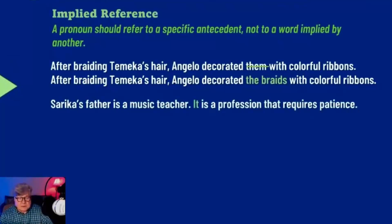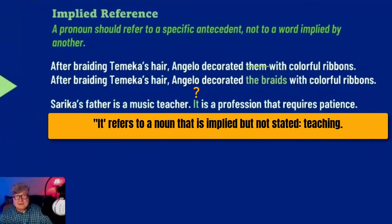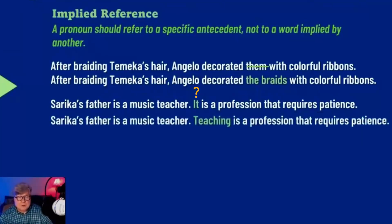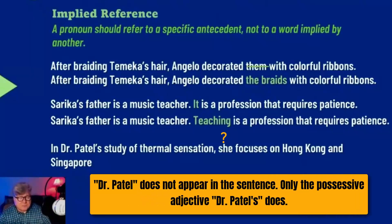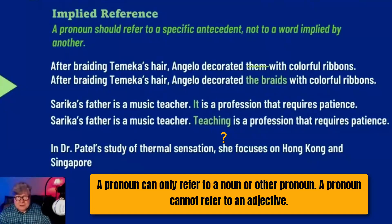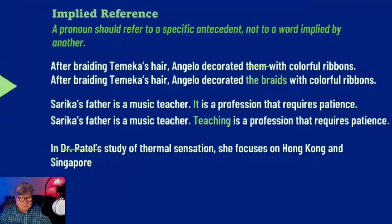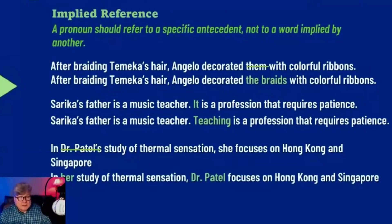So Rika's father is a music teacher — teaching is implied in the word 'teacher.' You don't want your pronoun to refer to an implied noun; go ahead and put that noun out there. In Dr. Patel's study of thermal sensation, she — the pronoun is 'she.' You might think it refers to Dr. Patel, but look closely: the noun Dr. Patel does not exist in this sentence. The possessive adjective 'Dr. Patel's' exists. So 'she' could refer to somebody else reading Dr. Patel's study. You have to make those antecedents specific: 'In her study of thermal sensation, Dr. Patel focuses on...' — here the pronoun 'her' refers forward to the specific antecedent, Dr. Patel.